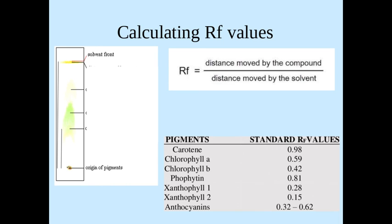What you would then do is you can compare the Rf value to known Rf values. So say for example you get an Rf value of 0.42, you would know from this table of known standard Rf values that that Rf value would be for example chlorophyll B, and that pigment there would be chlorophyll B.